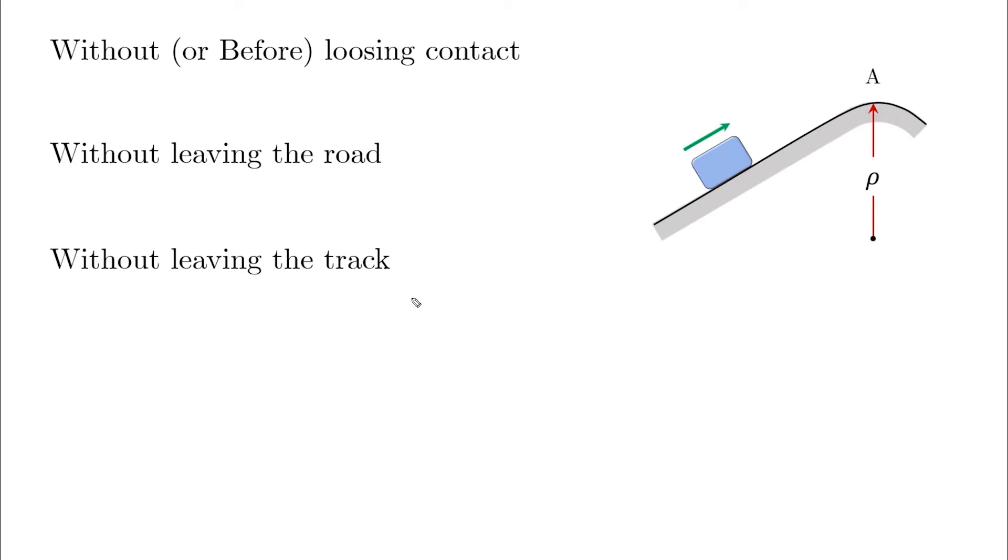It means that the normal in this case is equal to zero. So just as an example, let's say that the question is asking you what is the maximum velocity of the block at point A such that it does not leave the track, or the road, or it does not lose contact with the surface. All those have the same meaning.